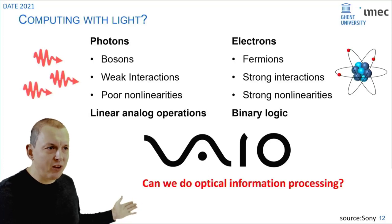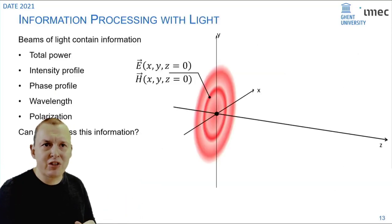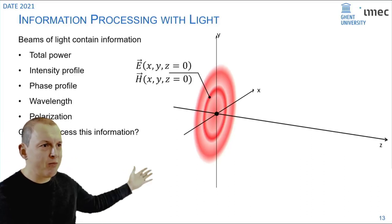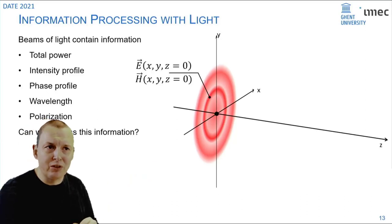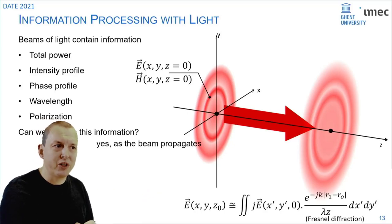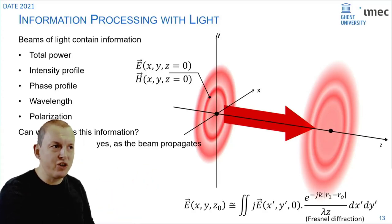Can we do real optical information processing with photons? Let's look at a classical way of information processing with light. If you have a beam of light with a certain intensity profile and phase profile you can propagate that beam through free space and you see that it changes. Essentially the beam of light is solving an integral equation. If you now change the medium through which the beam propagates you change the kernel of the integral.